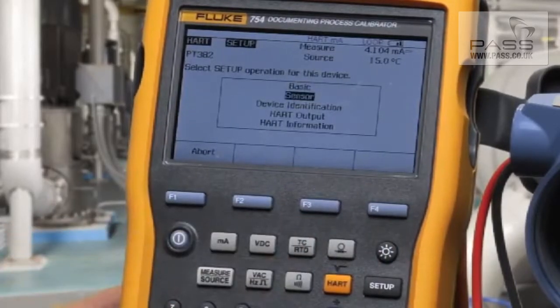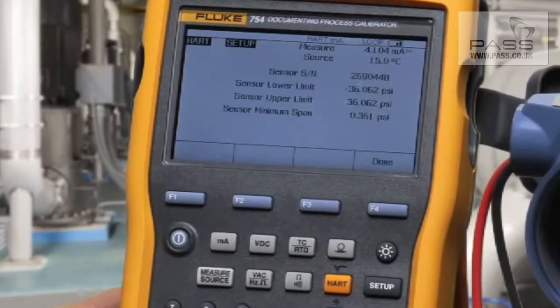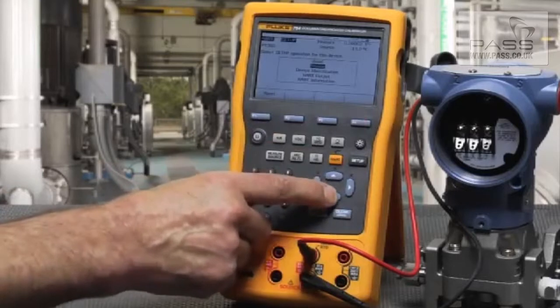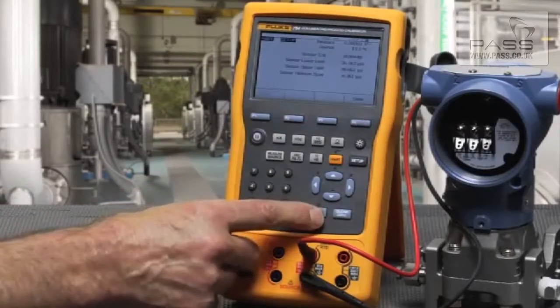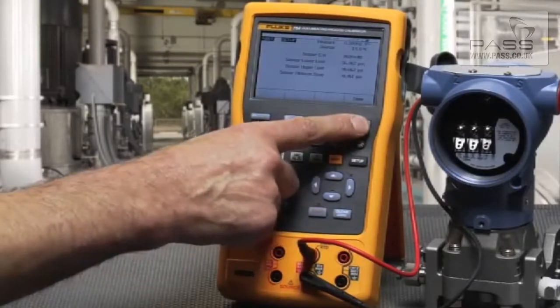We can also go into Sensor and view the sensor limits of the pressure transmitter, or if this were a temperature transmitter, we could change the temperature units from thermocouple to RTD, etc.